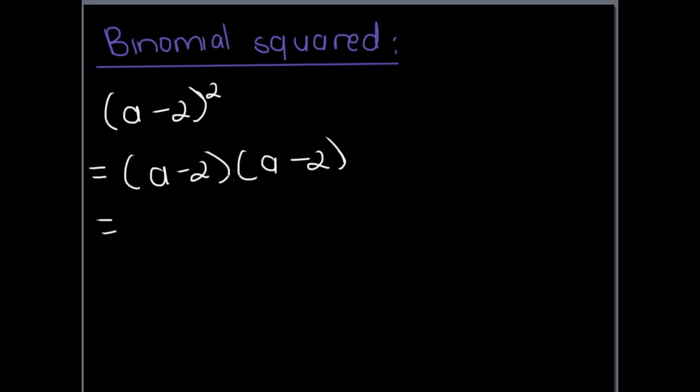If we do it this way, we can use FOIL again and we'll say a times a is a squared minus 2 times a is minus 2a. This minus 2 times that a will give you a squared plus 4 minus 2a. Right? So it's the same thing as earlier.